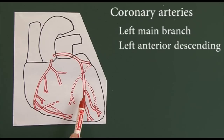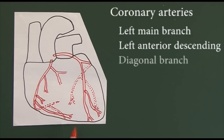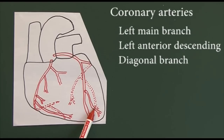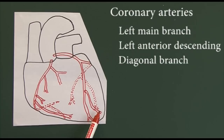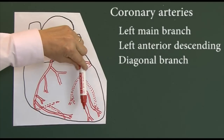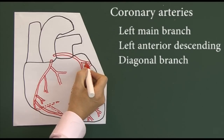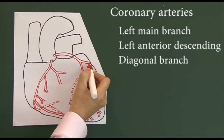Leaving here, we have another branch going down that way — that's called the diagonal branch of the left coronary artery. We also see that the left main coronary artery quickly divides into the LAD, the left anterior descending, but it also divides into this one here, which is the circumflex artery.